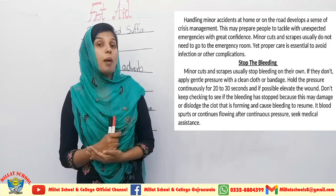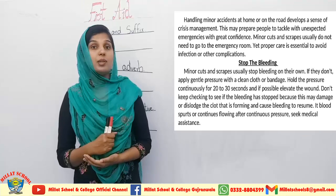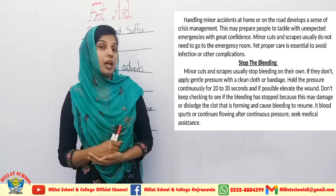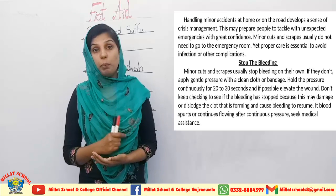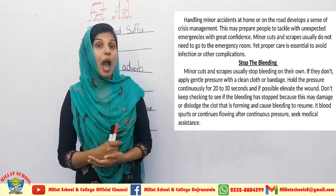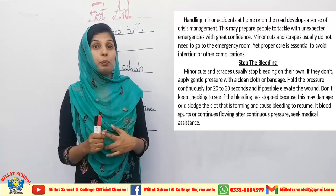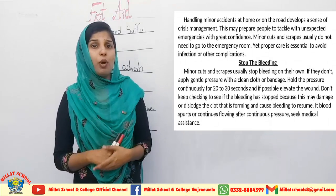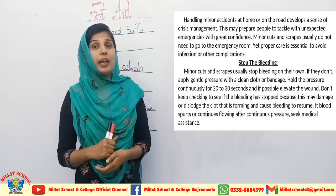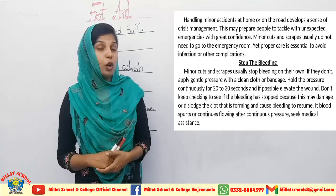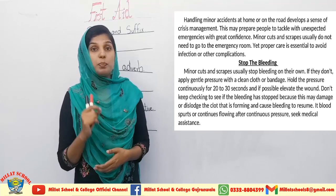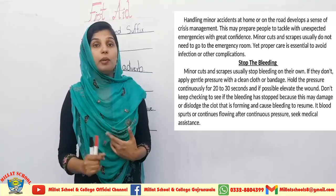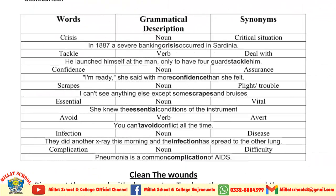The first thing when you are going to handle a wound is that you have to stop the bleeding first. In the second paragraph, the writer gives instructions on how to stop the bleeding coming from your wound — you have to put strong pressure for 20 to 30 seconds to the cut and not check it again and again. Such precautionary measures are explained in this chapter, and by following these remedies you can stop the bleeding.